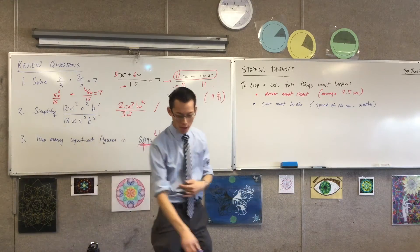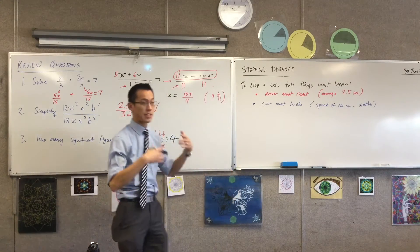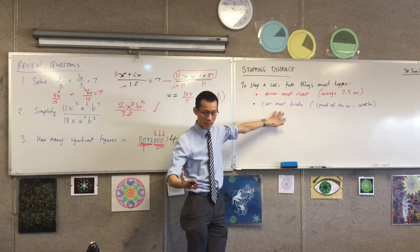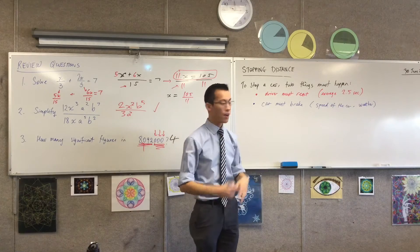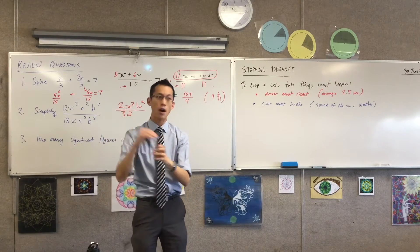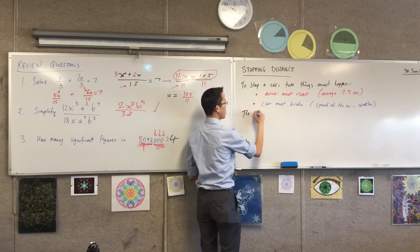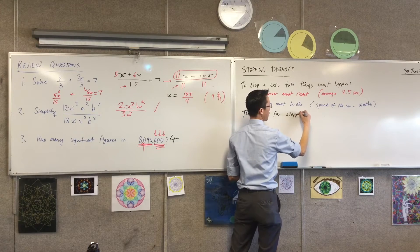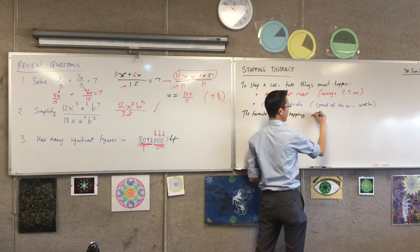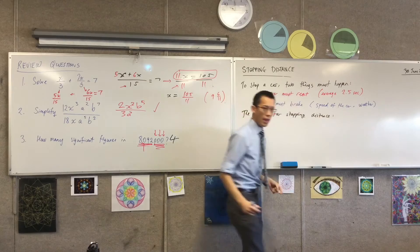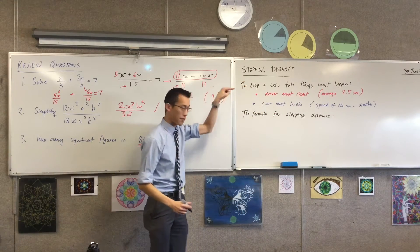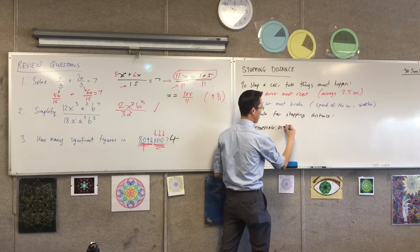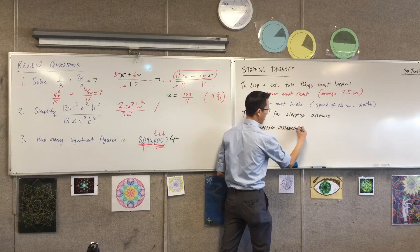So to stop a car, these two things have to happen, and each of them takes time, right? The two and a half seconds on average for this, and then however many number of seconds dependent on these factors. So therefore, based on these two things, we develop a formula, right? The formula for stopping distance. The formula, because it depends on these two things, it has to account for each of them.